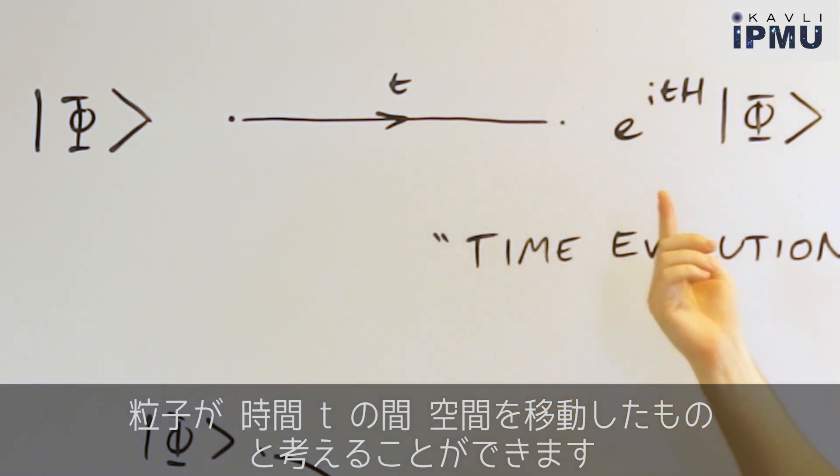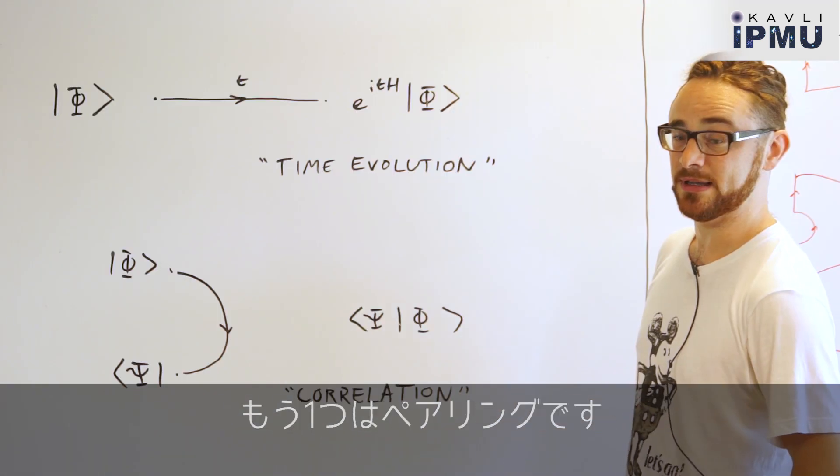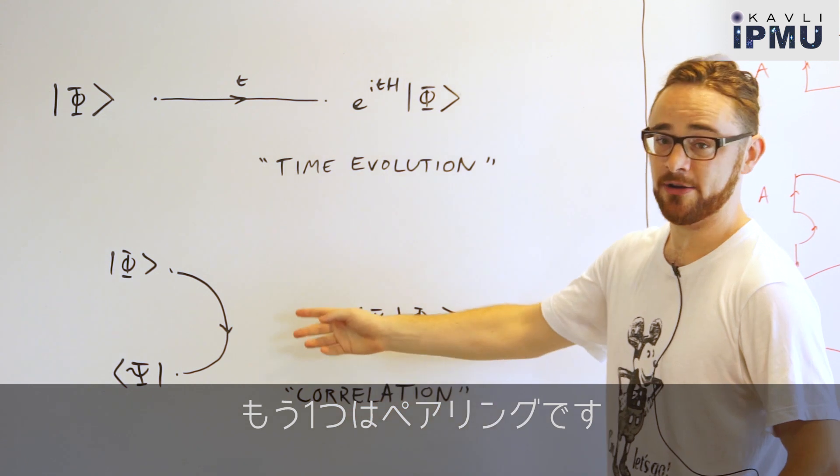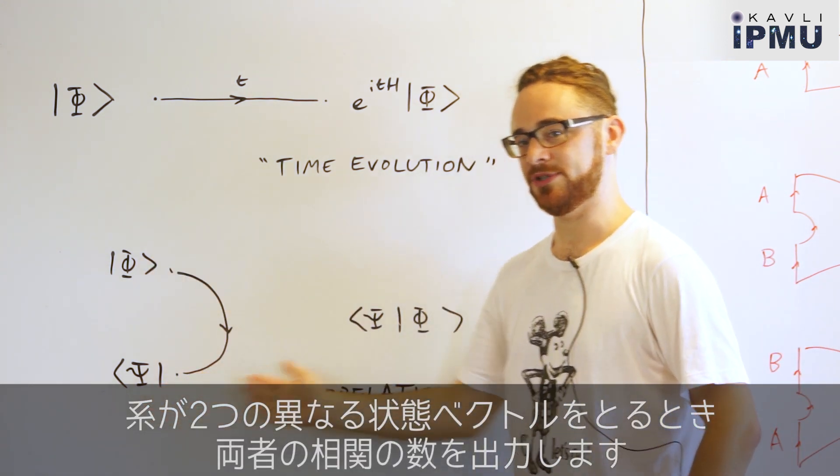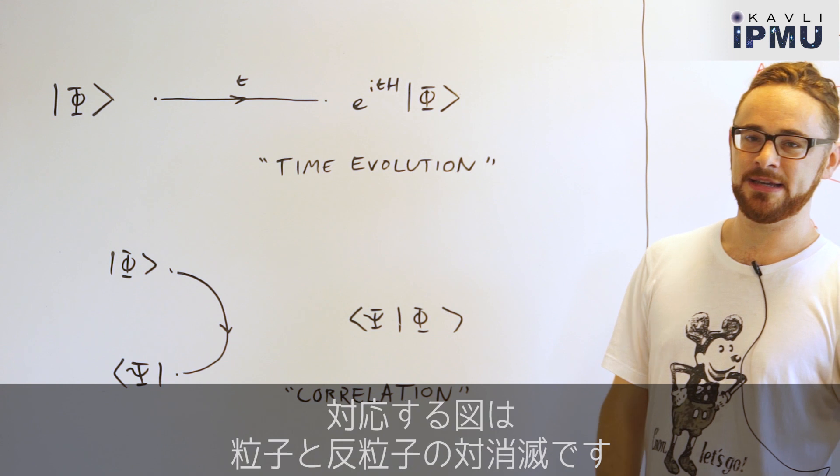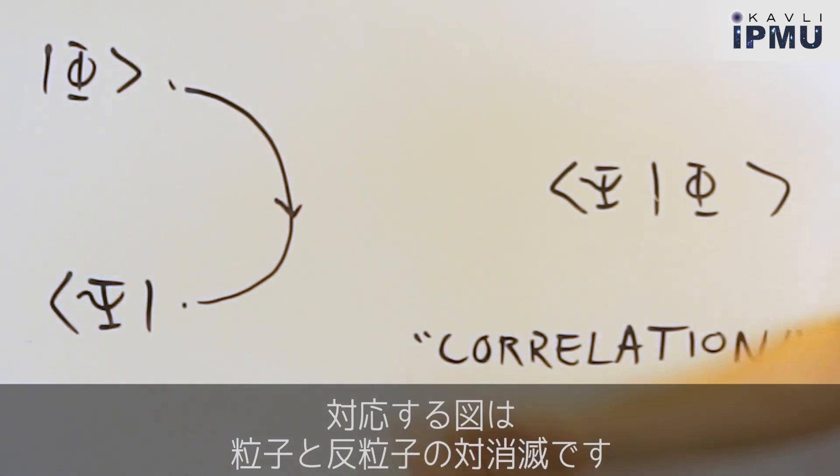The second operation is a pairing which takes in two state vectors and outputs a number, the correlation between those states. The corresponding picture is a particle and an antiparticle annihilating.